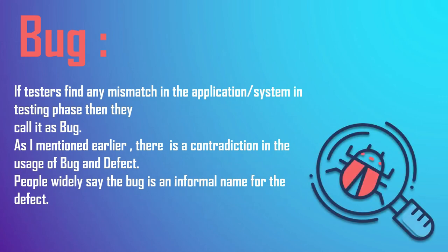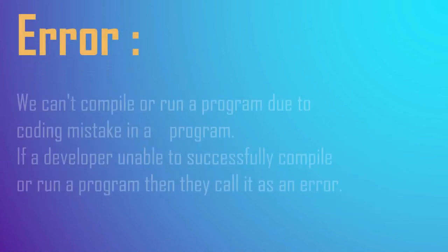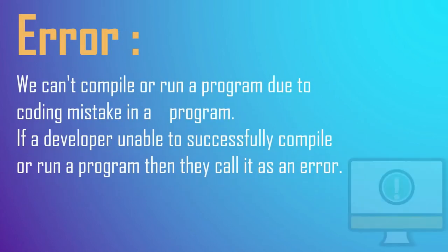What is a bug? A bug is a fault. If testers find any discrepancy in an application or system under testing, then they call it a bug. As mentioned earlier, there is a contradiction in the usage of bug and defect. People widely say the bug is an informal name for the defect.